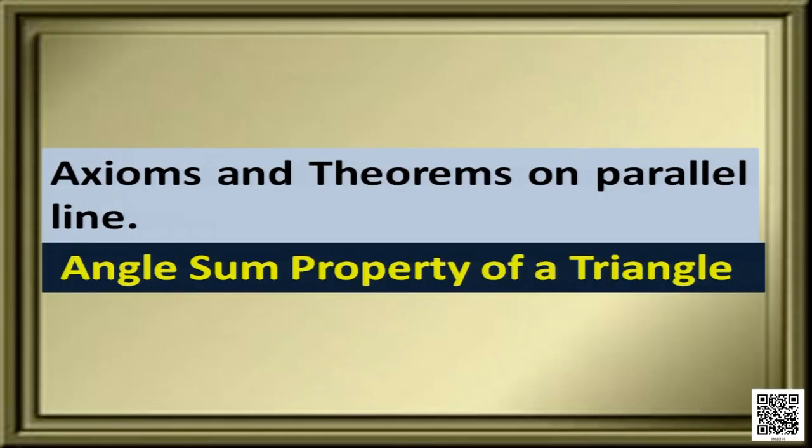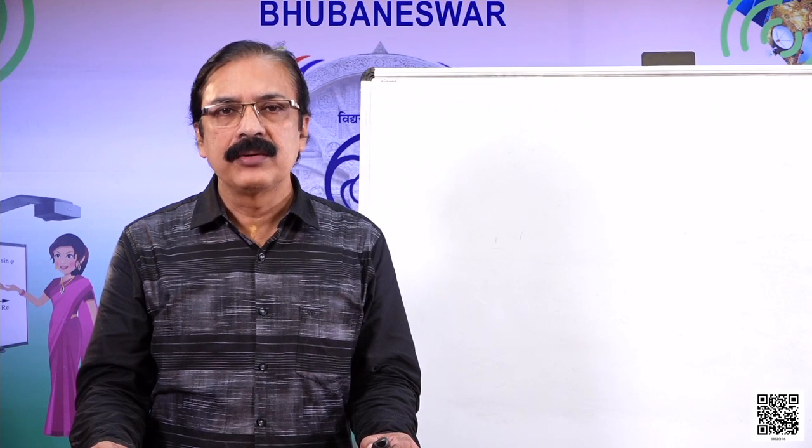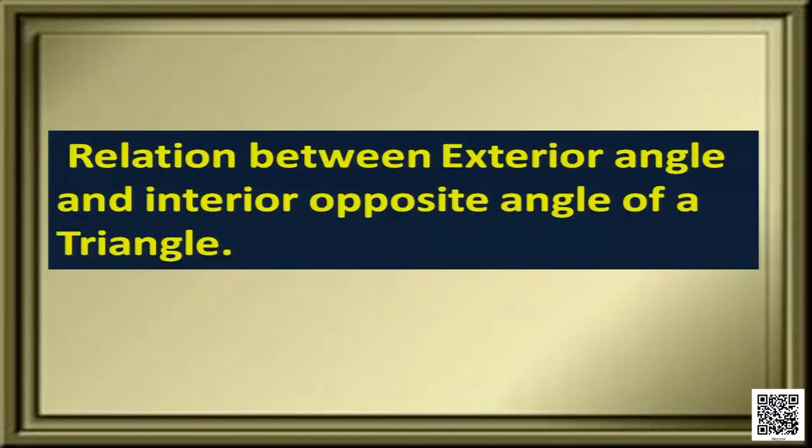We have discussed different axioms and theorems on parallel lines and also one application of that, the angle sum property of a triangle, which says that the sum of the interior angles of a triangle is 180 degrees. Today, we are going to discuss the relation between exterior angle and interior opposite angle of a triangle, and we will discuss some problems based on this relation.